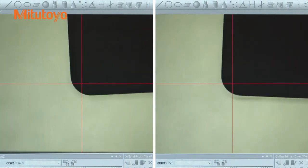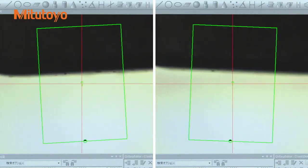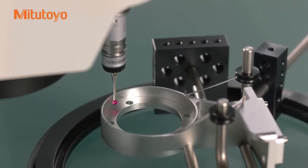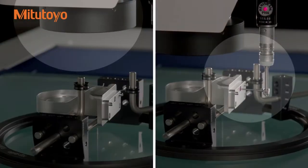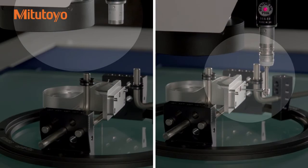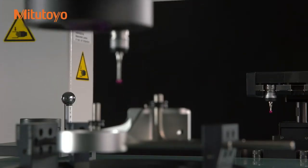QV Active can be equipped with a touch probe. This allows non-contact and contact measurements to be combined in a single platform, reducing the need for multiple setups for a single part.